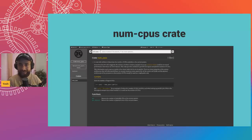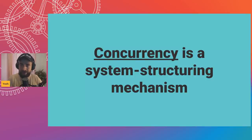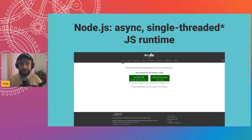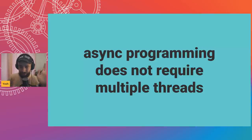You can measure parallelism in Rust using the num_cpus crate — you call it and it gives you back a number. But we won't be talking about parallelism today. Instead we'll be talking about concurrency, which is a system structuring mechanism. Node.js is famously a single-threaded JavaScript runtime — multiple threads behind it, but the actual thing you execute is single-threaded and still async. That's because async programming does not require multiple threads.